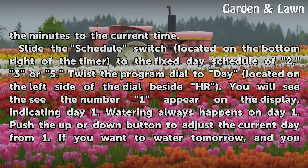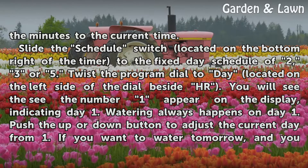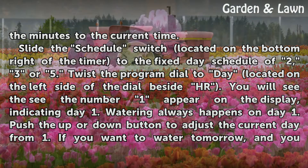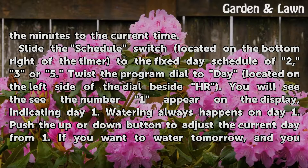Slide the schedule switch located on the bottom right of the timer to the fixed day schedule of 2, 3, or 5. Twist the program dial to DAY, located on the left side of the dial beside HR. You will see the number 1 appear on the display, indicating day 1.